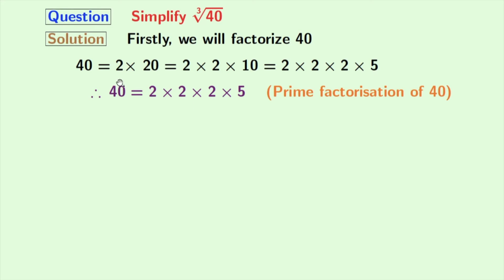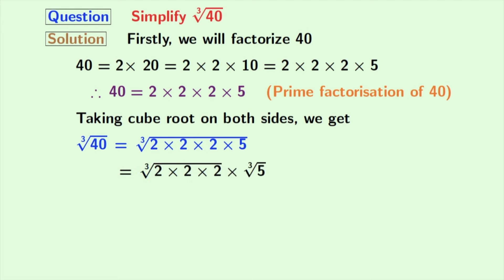Now we will take cube root on both sides. And doing that we get cube root of 40 is equal to cube root of 2 times 2 times 2 times 5. Now after grouping we get cube root of 2 times 2 times 2 times cube root of 5.